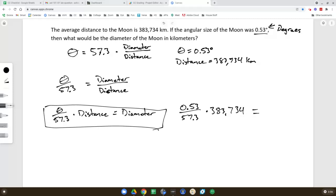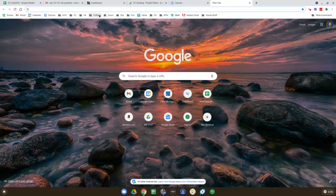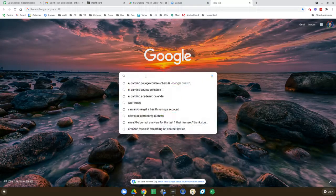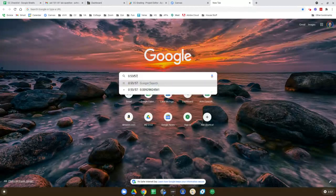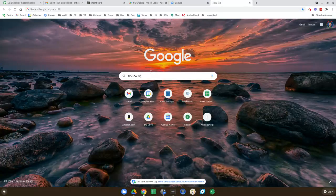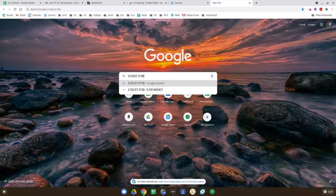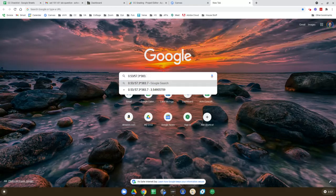Now when I do that, you could do that a lot of different ways. I generally will just type that right into Google. So if I go to Google here and I type in those values, 0.53 divided by 57.3 times 383,734.